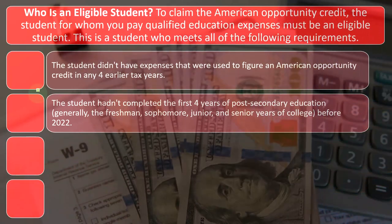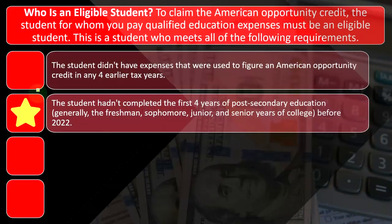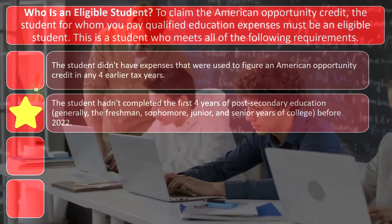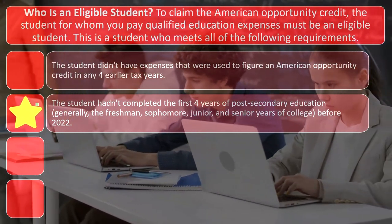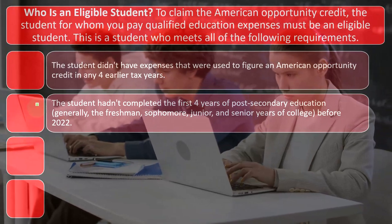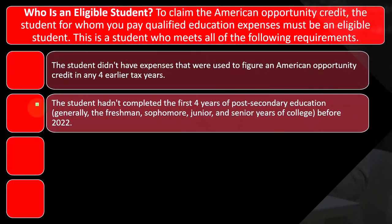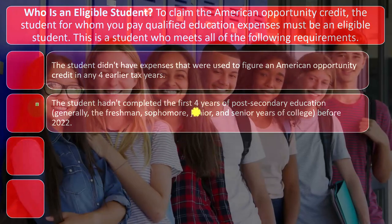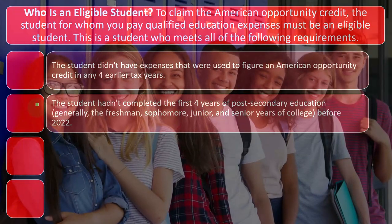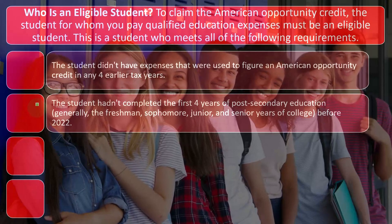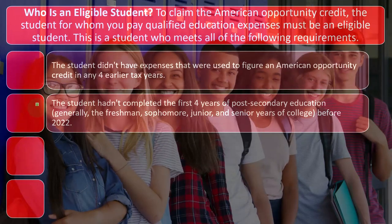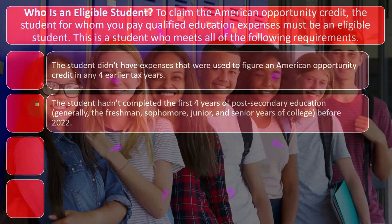The second condition looks similar but is different. The student hadn't completed the first four years of post-secondary education — generally freshman, sophomore, junior, and senior years of college — before 2022. When we think about college traditionally, we pack it into that four-year time frame. But in practice, many people might take longer because that assumes a full-time student scenario. Sometimes people do it in a shorter time frame, and some vocational schools may not fit as neatly into this threshold.